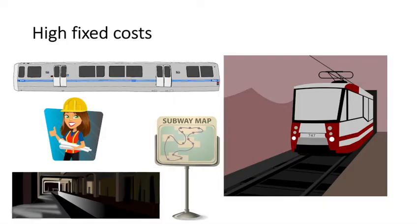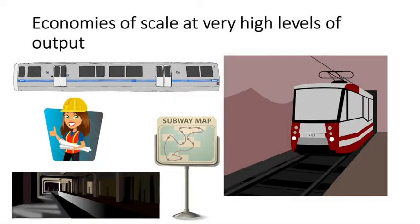Consider the financial capital they would need to have to start such a project. In China specifically, this kind of project is only undertaken by the government. The high fixed costs that the single firm faces are averaged out over a larger quantity of production. That is our second characteristic: the potential for economies of scale at very high levels of output. The firm is able to achieve the lowest average cost by serving the entire market.